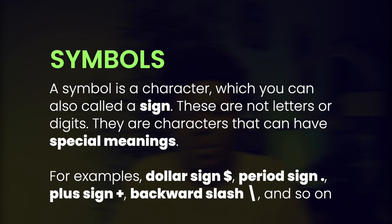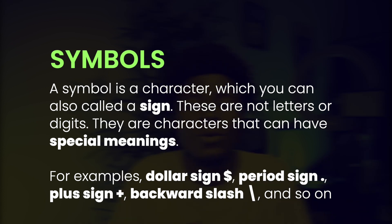Another term to understand is symbols. A symbol is a character which you can also call a sign. These are not letters or digits — these are characters that can have special meanings. For example, you have the dollar symbol, the period sign, the backward slash sign, and many more. As we'll see in this course, some of these symbols can have special meanings or special functions in regular expressions.